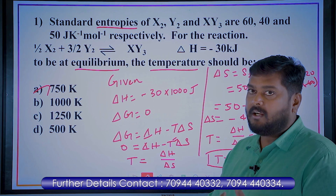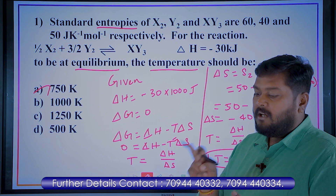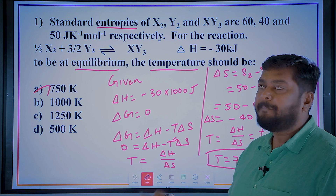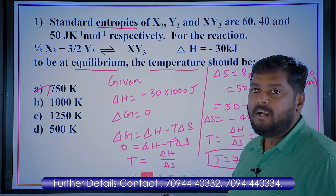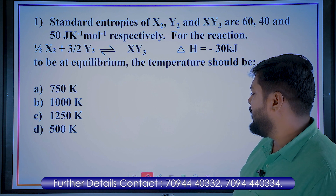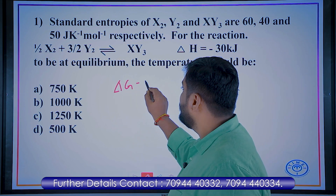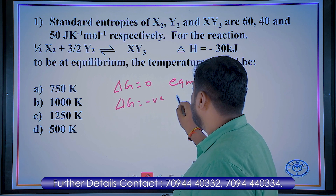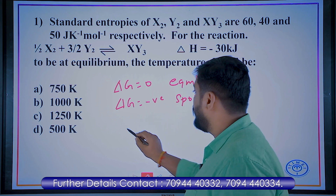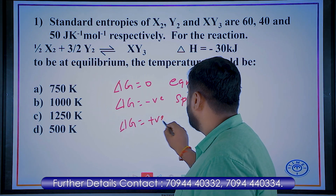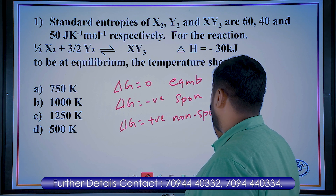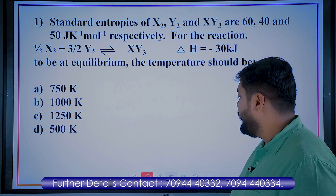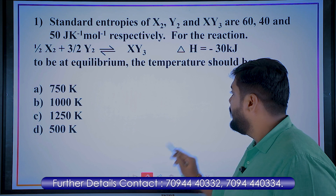So, in the equation with entropy and ΔH, we are asked to find the temperature at equilibrium condition, and we calculated it using T = ΔH/ΔS. Note: when ΔG = 0 the reaction is at equilibrium; when ΔG is negative the reaction is spontaneous; when ΔG is positive the reaction is non-spontaneous. Moving to the next question.